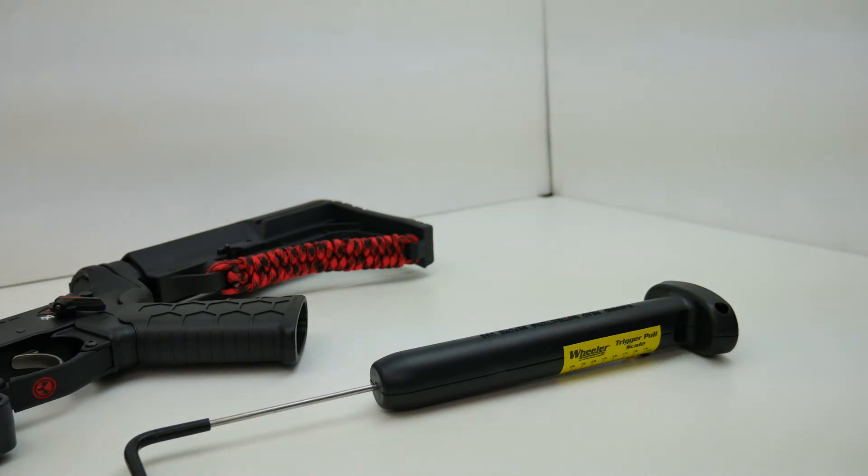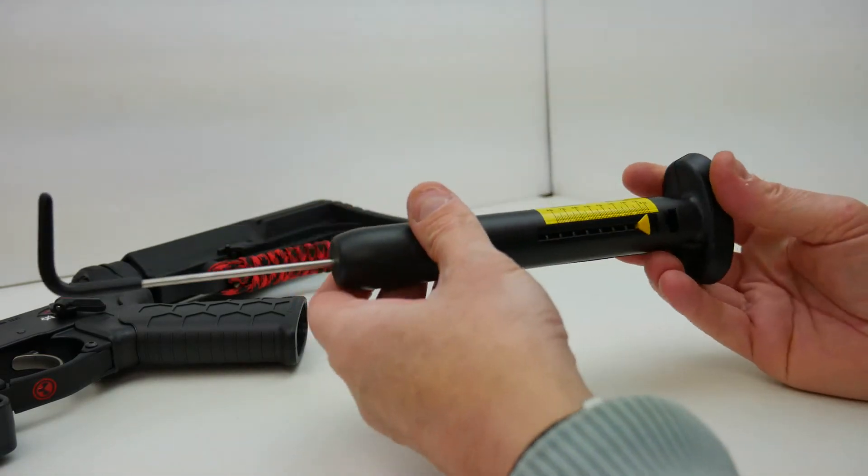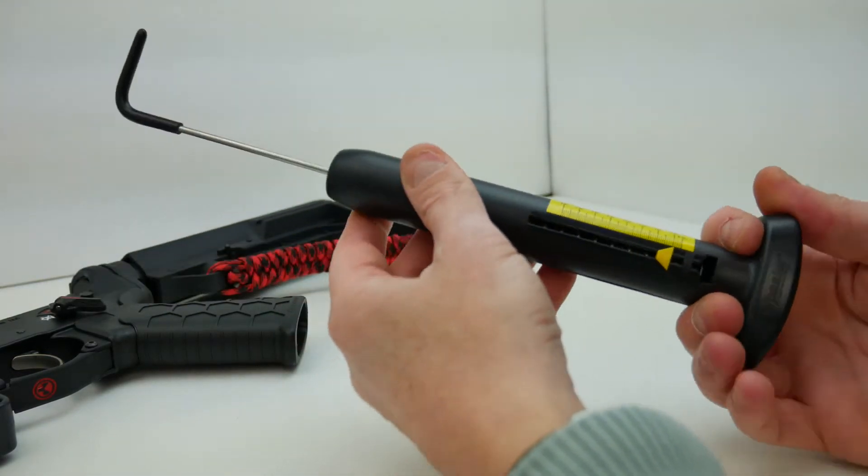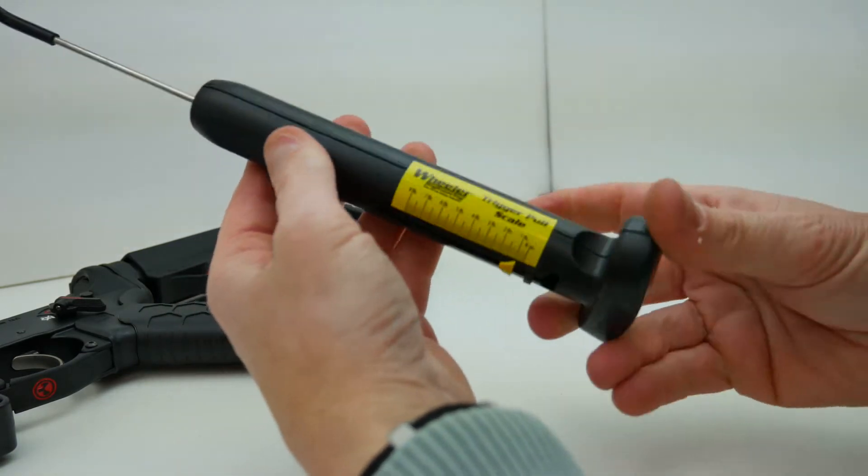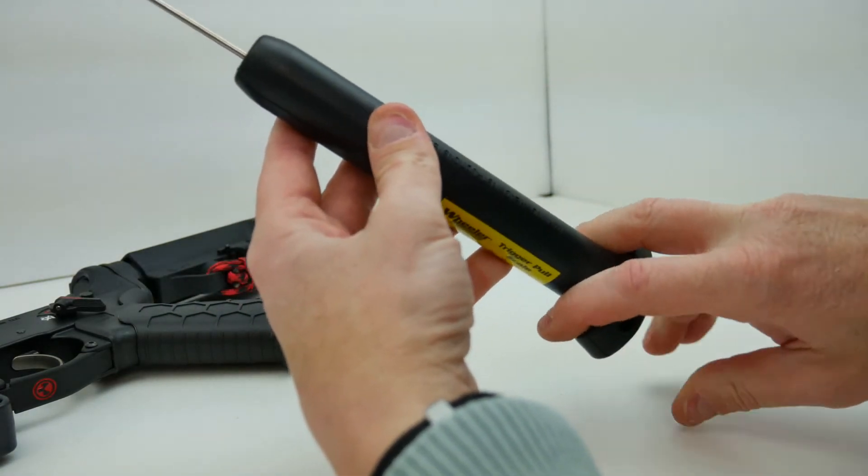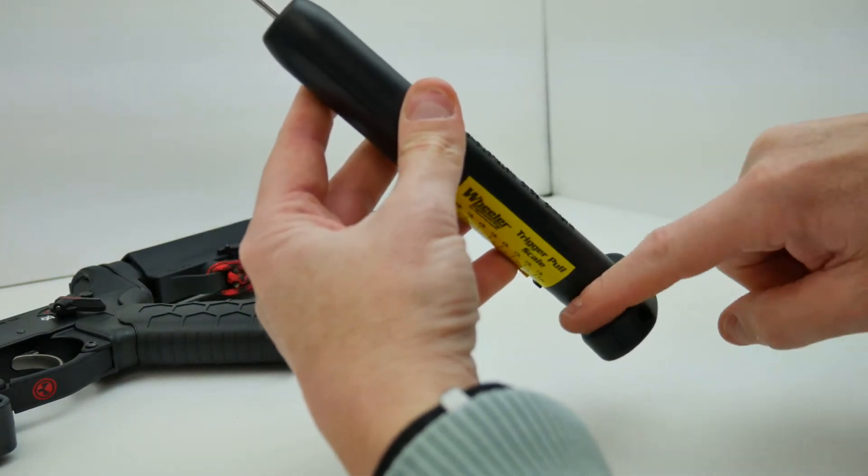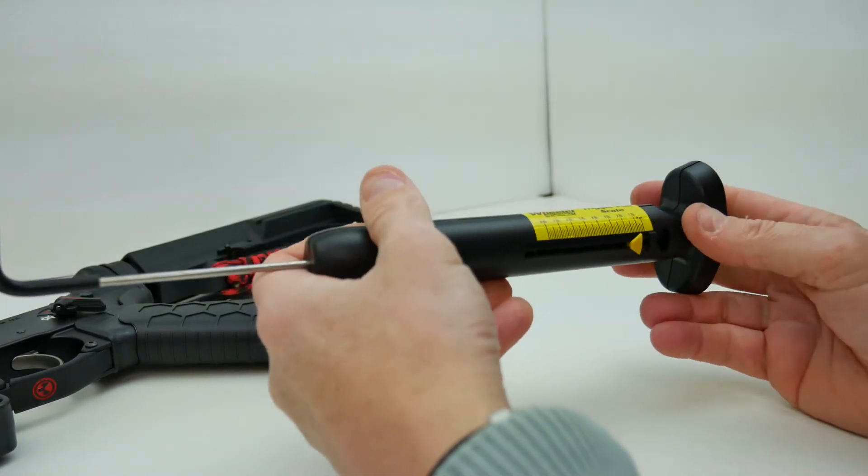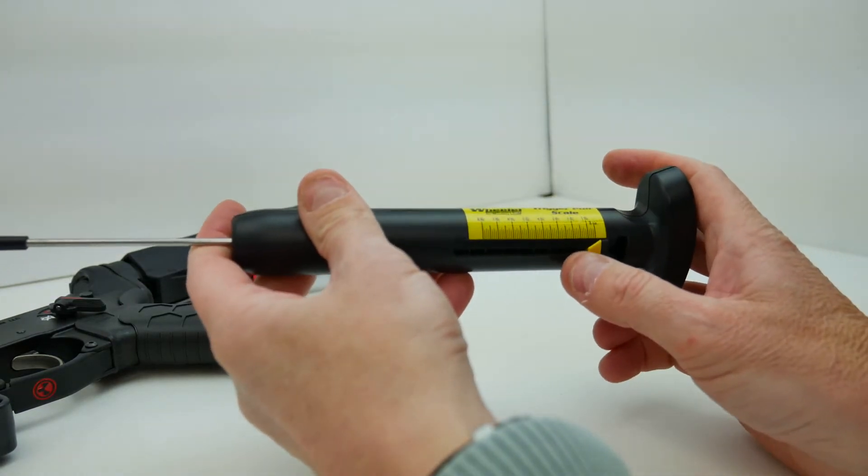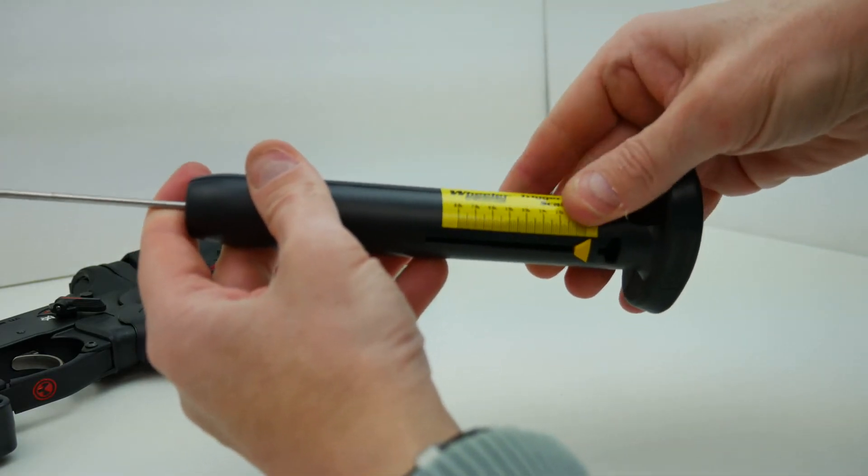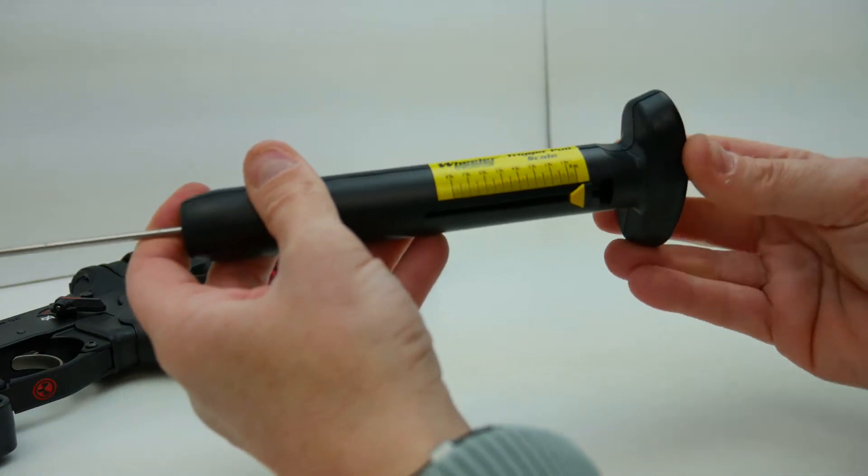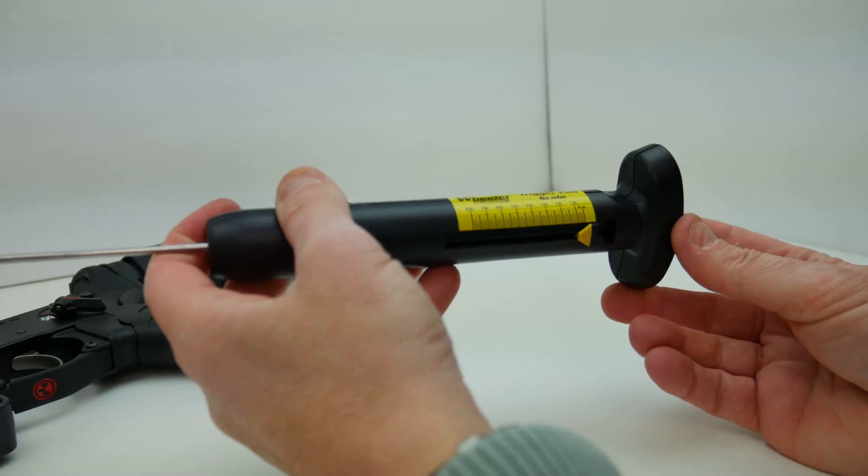So what do we got here with this tool? This is plastic. You can see it's kind of got this little handle right here where it's grooved to put a couple of your fingers.